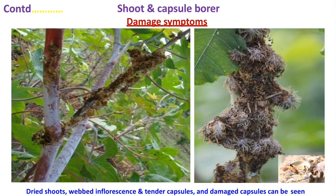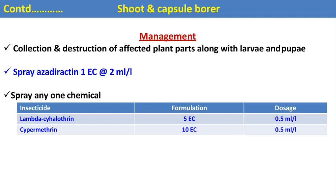In this picture you can see the dried shoots, wilted inflorescence, and damaged tender capsules that result from severe infestation of shoot and capsule borer of castor — these are the different characteristic symptoms produced due to the feeding of the shoot and capsule borer. For management, spray the crop with neem-based products. For chemical control, lambda-cyhalothrin and cypermethrin are the two effective chemical insecticides.